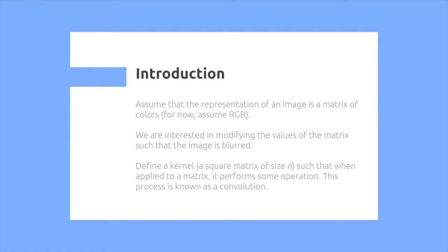Assume that the representation of an image is a matrix of colors, for now we can assume RGB. We're interested in modifying the values of the matrix such that the image is blurred.